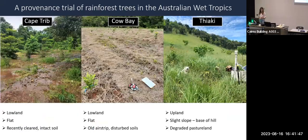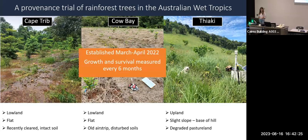We have three sites: Cape Tribulation, which is a lowland site at the Daintree Rainforest Observatory with flat topography, recently cleared with quite intact soil with high nutrients. Our other lowland site is Cow Bay, which has very different soil characteristics - it was on an old airstrip with very disturbed soils and a low water holding capacity. Our third site is an upland site on a slight slope at the base of a hill on greater pasture land. Across these sites, we planted our species in March/April last year and have been measuring growth and survival every six months.